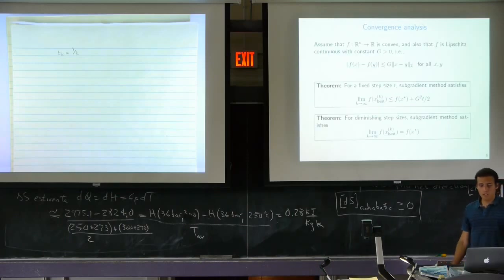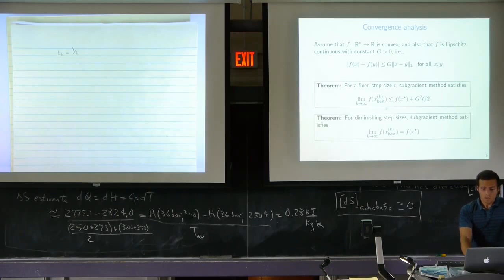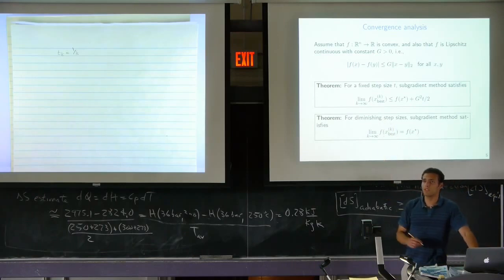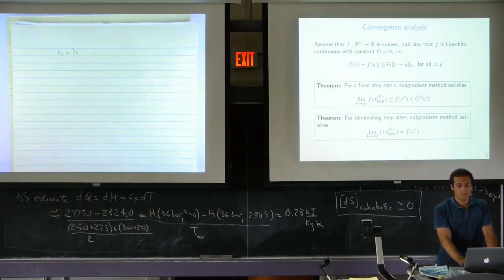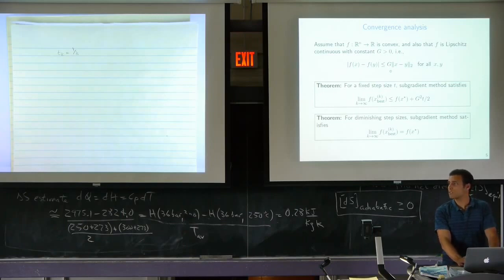Here are the convergence results for subgradient method, which you'll prove on the homework from first principles. The first result: with a constant step size, in the limit, the function value at the best point converges to something suboptimal—specifically, f(x*) plus g² times t over 2, where t is the constant step size and g is the Lipschitz constant. The assumption is that our function is Lipschitz with constant g.